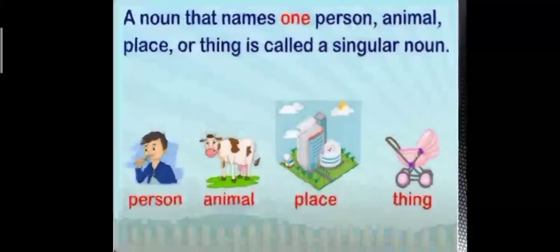When we talk about one person, animal, place or thing, we are talking about a single thing. It is known as singular noun. Like for example: a boy, a cow, a building, a pram.